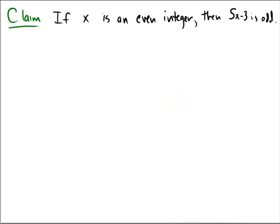Let's try to prove the following statement. If x is an even integer, then 5x minus 3 is odd.